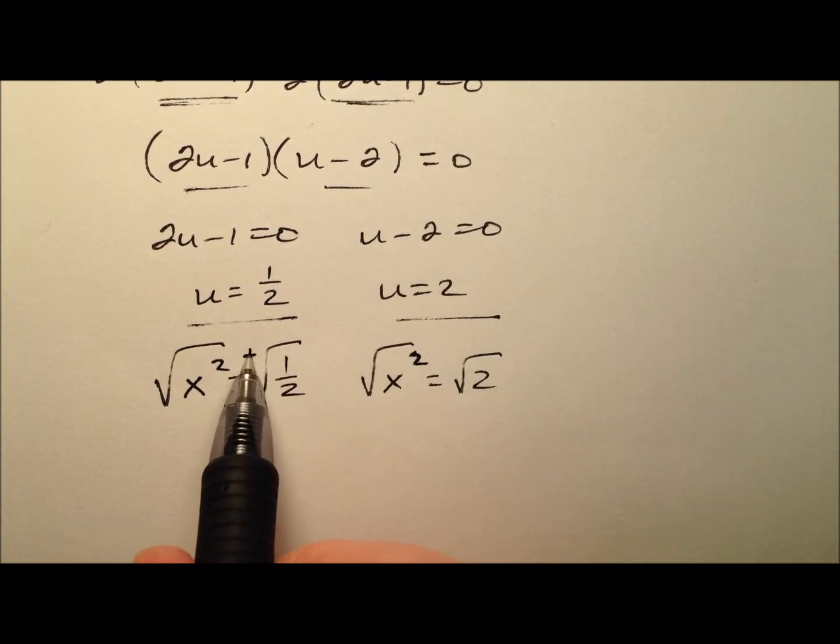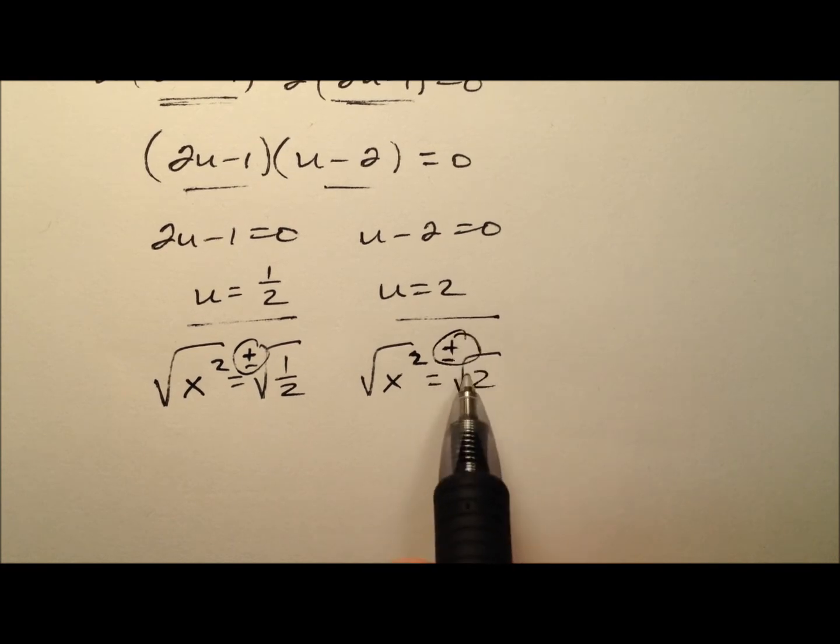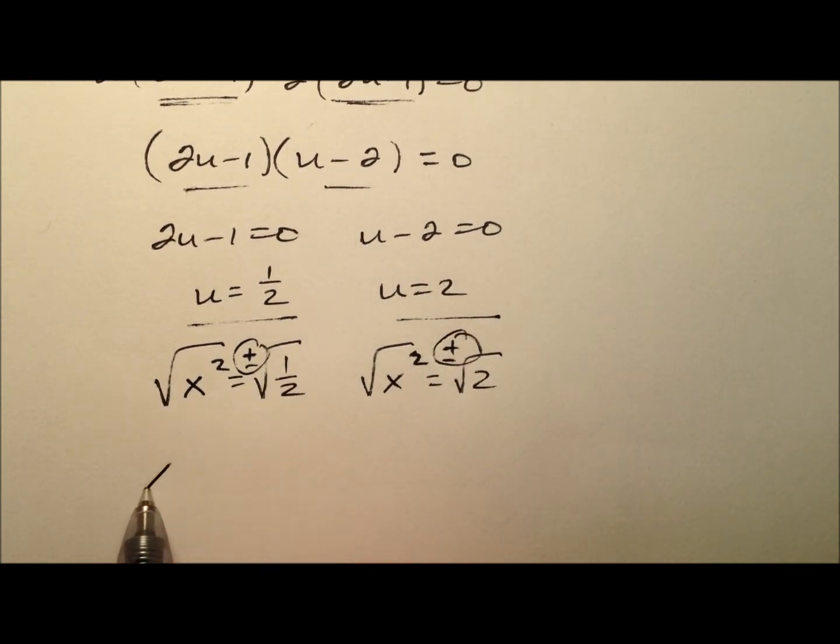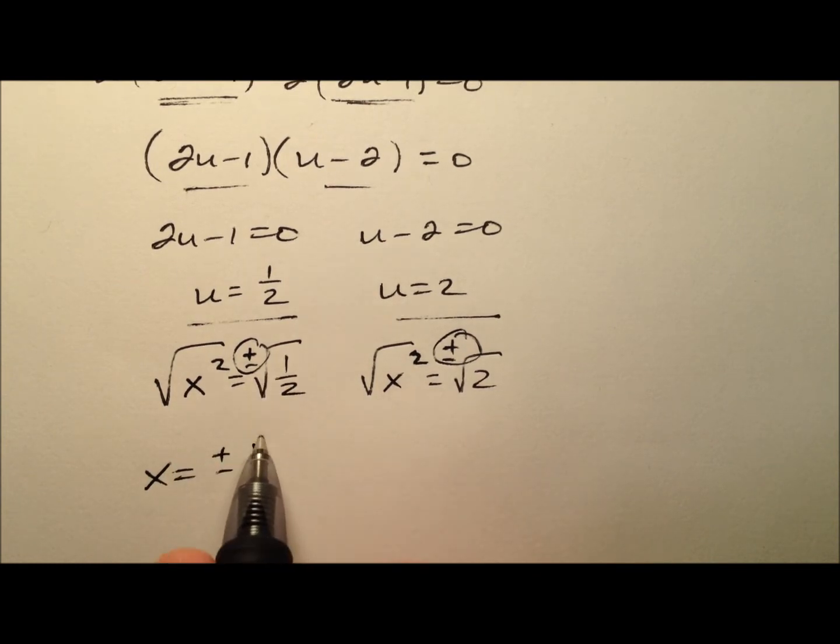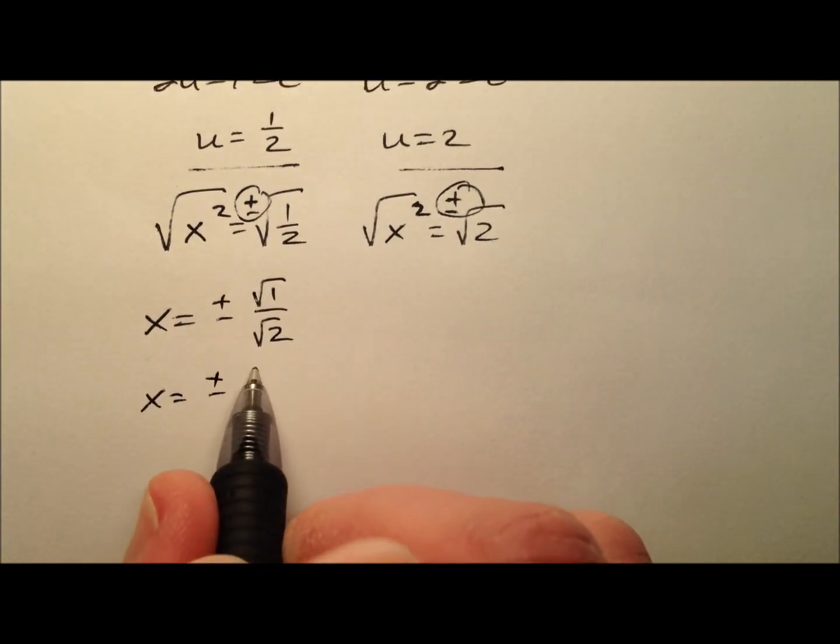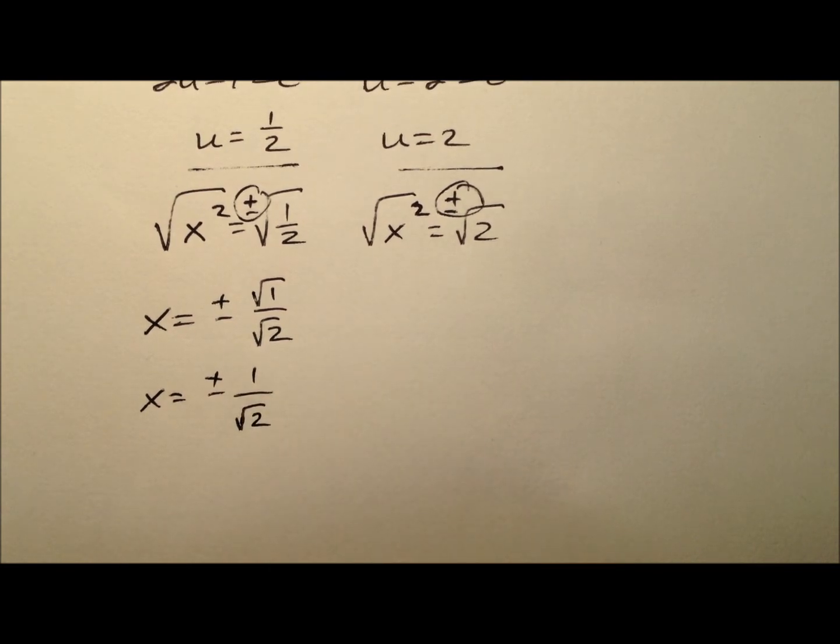Now I can simply use the square root property for both sides. But when I do that, I'll need a plus or minus on the sides without the perfect x squared. So I'll have x equals plus or minus the square root of one-half, which really is the square root of 1 over the square root of 2. We're going to fix this up a little bit - it's going to be plus or minus 1 over the square root of 2.